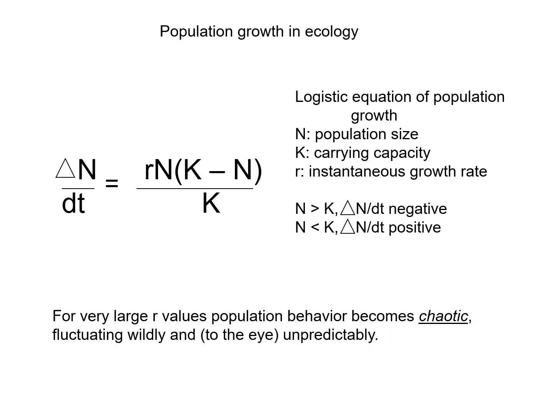Here's an equation from ecology — this is logistic population growth. The change in population size over time is given by an equation with a growth rate, the previous population size, and a carrying capacity. When the population is larger than the carrying capacity, the change is negative and the population comes back down. When it's less than carrying capacity, the growth rate is positive and the population goes up. For very large values of R (the growth rate), the population behavior becomes chaotic — it appears to fluctuate wildly and unpredictably.